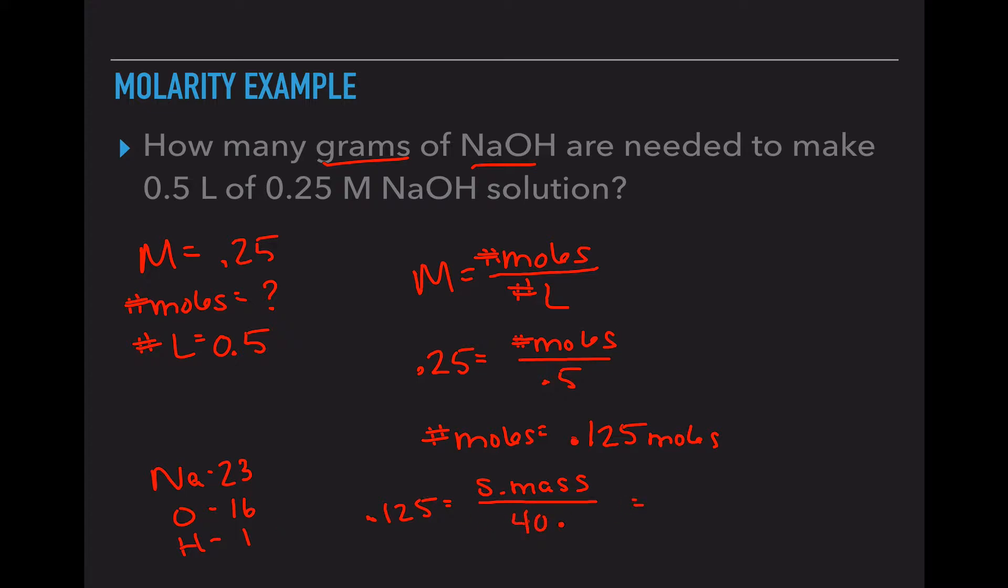Then we're going to multiply 40 and 0.125 and our sample mass is 5 grams. So we need to dissolve 5 grams of NaOH in half a liter in order to have a molarity of 0.25. So all molarity is, it tells us how much is present of that solute. 0.25 being less than one is actually a pretty weak solution.